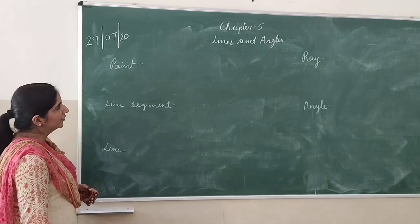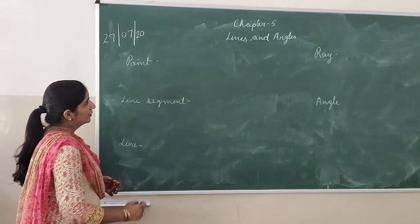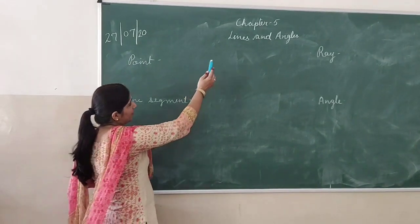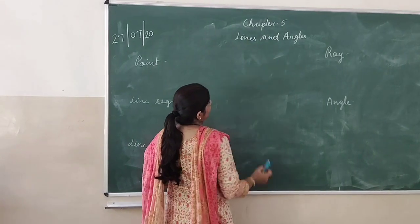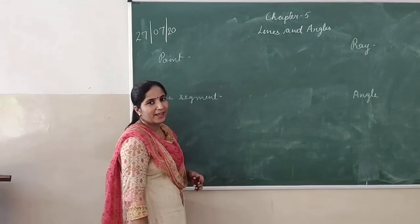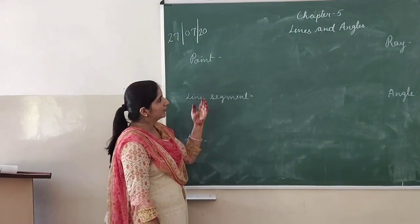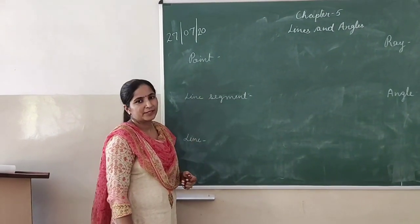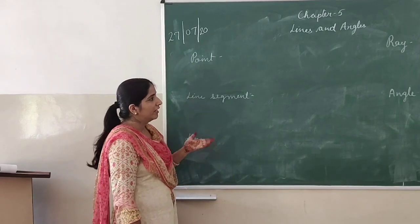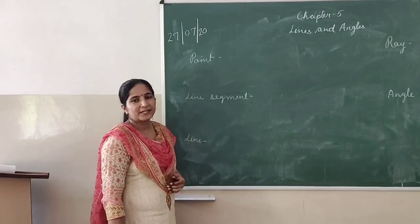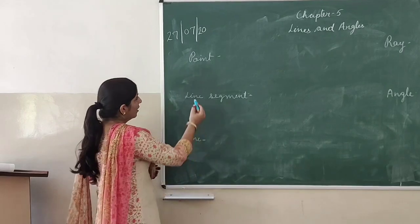Good morning students. Today we are going to start chapter number 5. The name of the chapter is Lines and Angles. Before starting this chapter, let us recap some of the definitions that we already discussed in class 6.